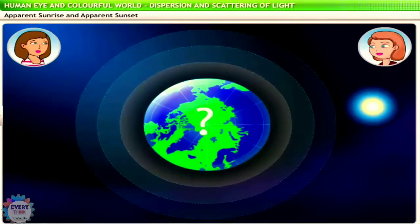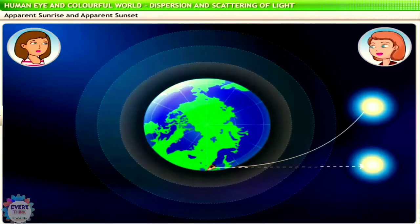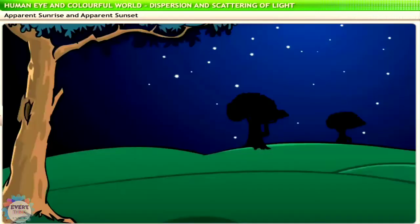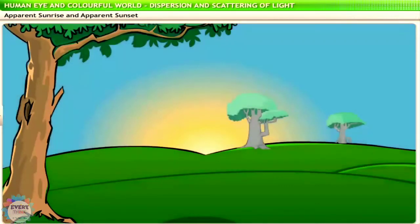And what were you saying about apparent sunrise and sunset? Well, not many of us realize this, but the fact is we see the sunrise before the sun actually rises above the horizon. So when we see the first rays of sunlight, we are actually witnessing an apparent sunrise.